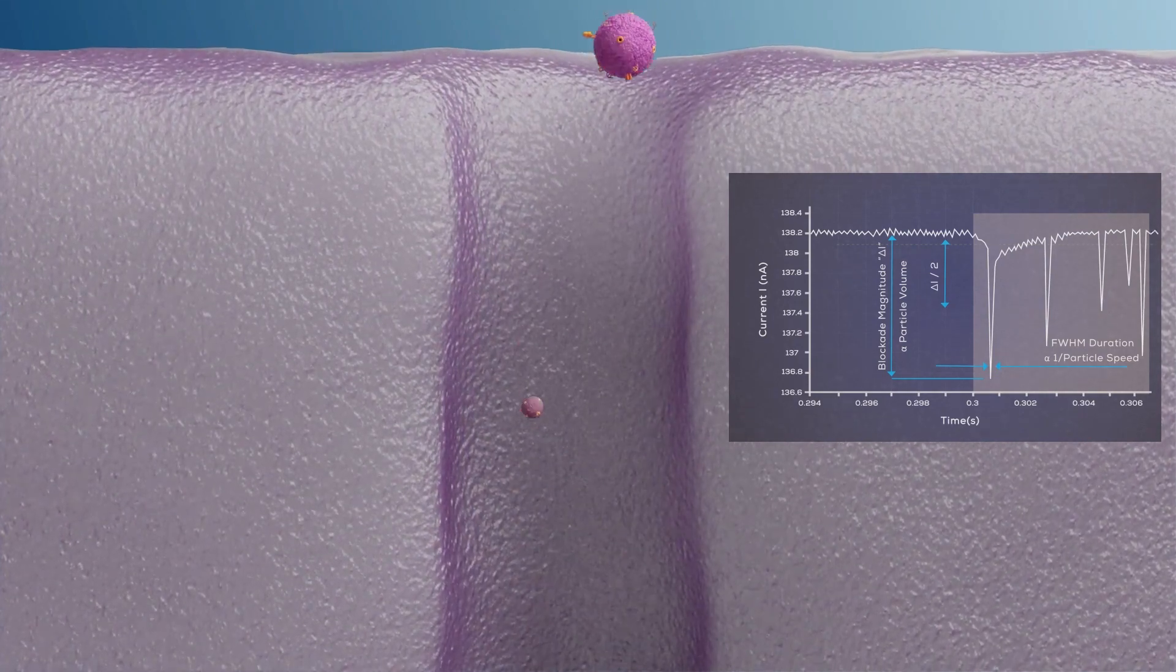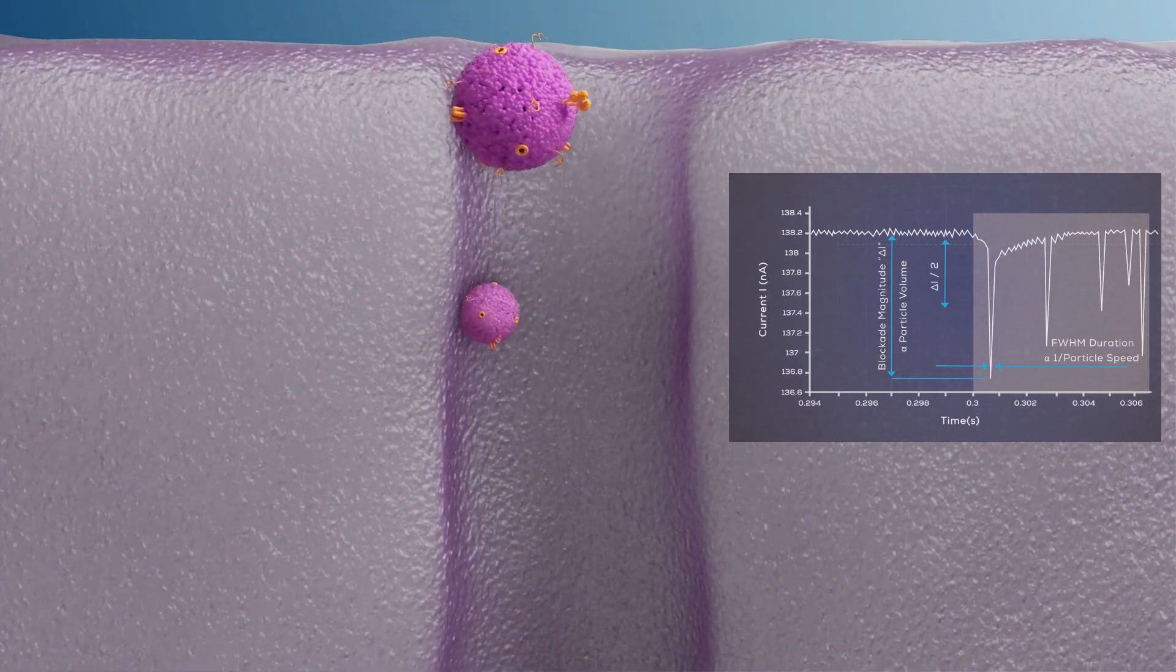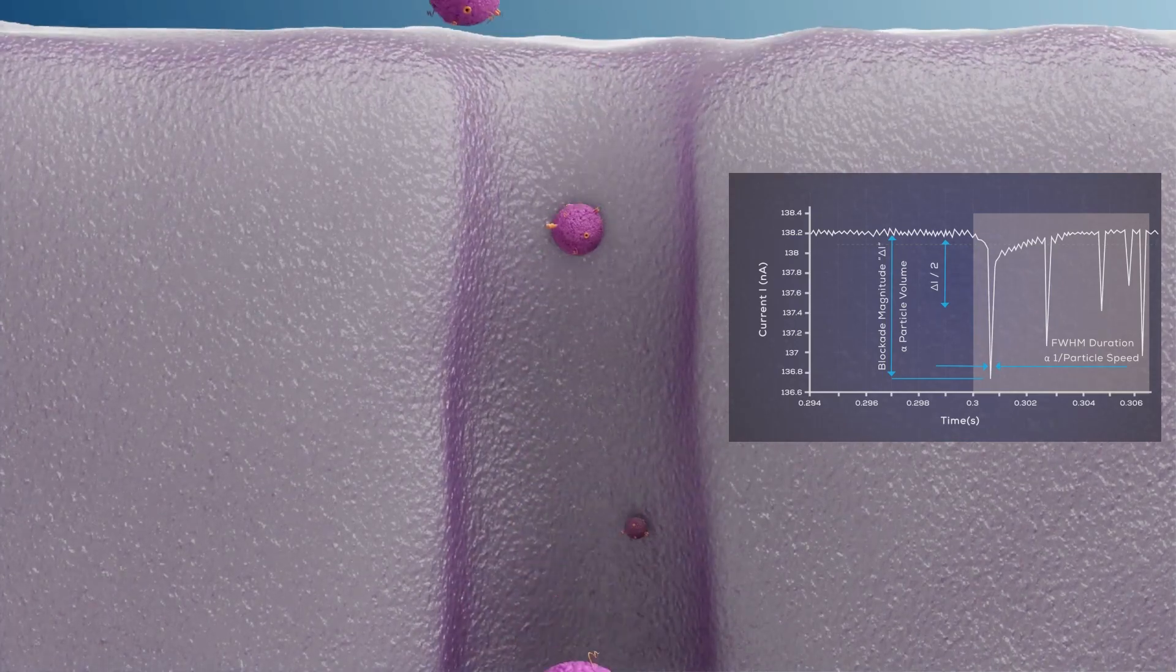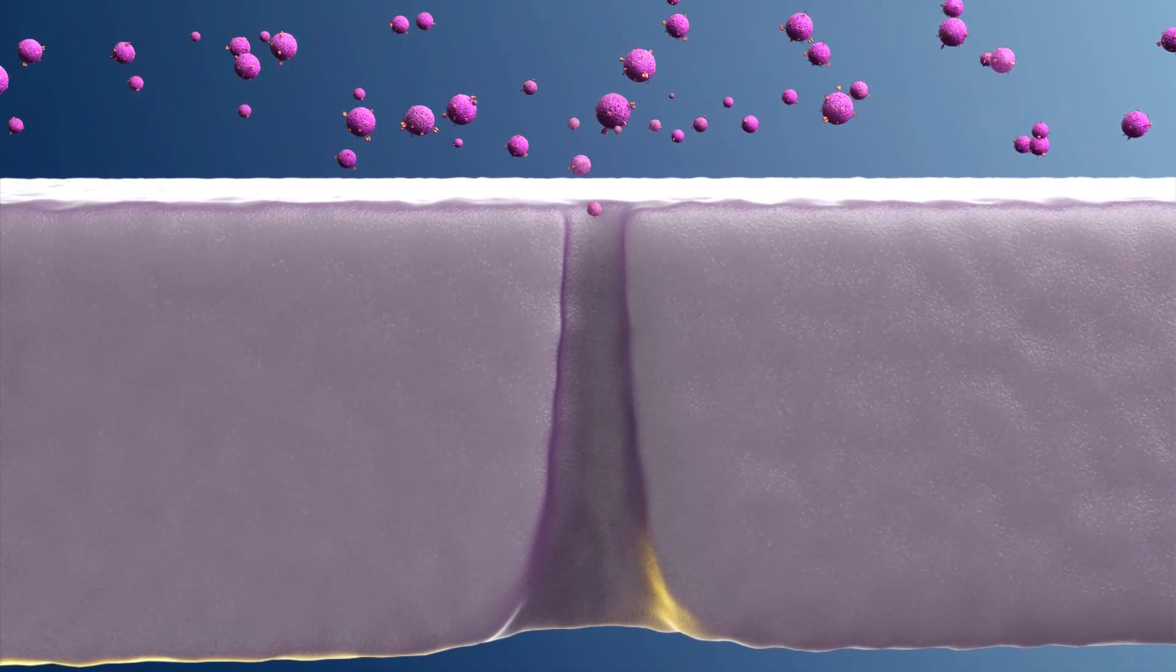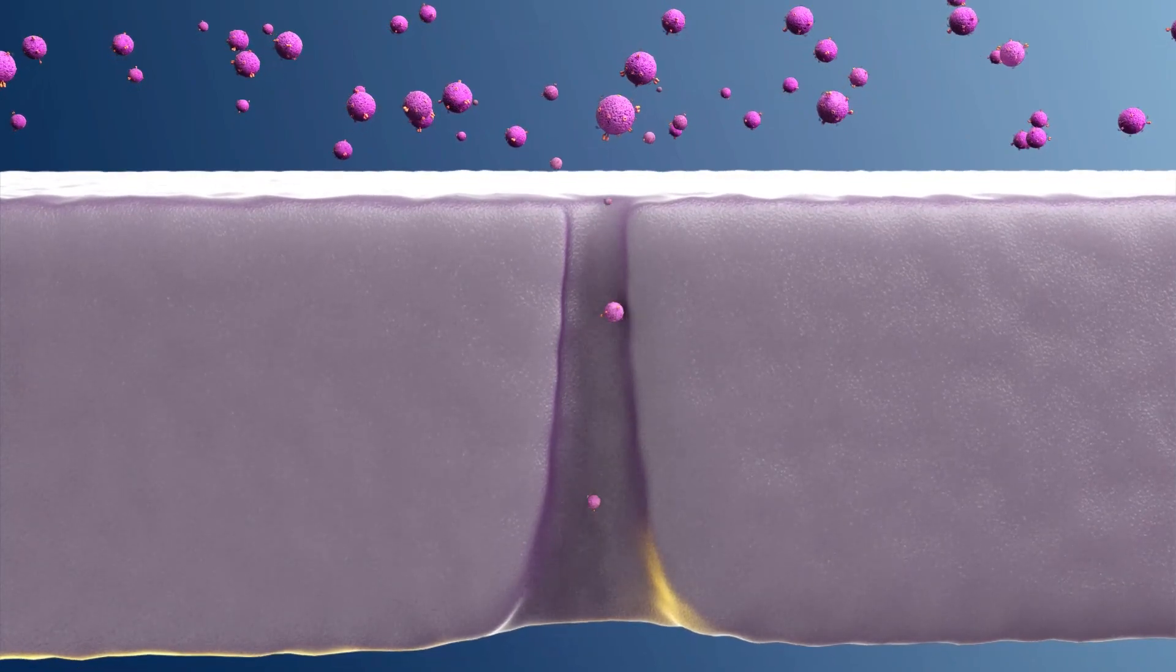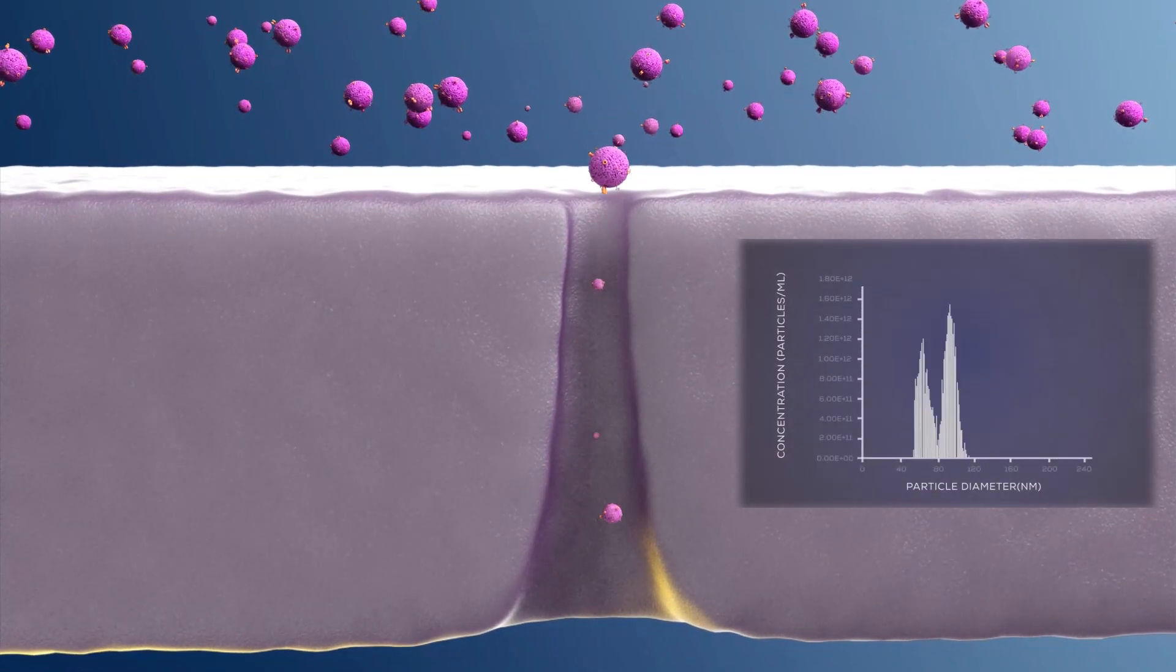The height of the signal determines the size of the particle. The duration or time taken for a particle to pass through the pore allows determination of particle charge. The rate at which particles pass through the pore determines the sample concentration.